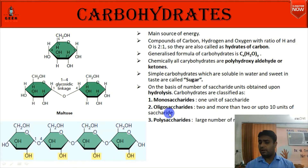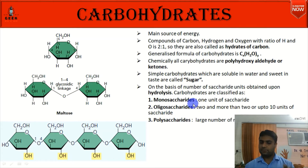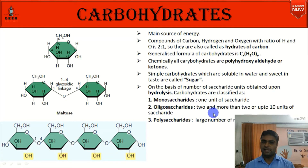Saccharide means sugar units. If you hydrolyze a long chain polysaccharide and separate its monomeric units, the number of those units determines the classification. If only one monomeric unit is present, it is called a monosaccharide. If two or more up to ten units are present in a chain, it is the oligosaccharide. If more than ten units are present, it is called the polysaccharide.